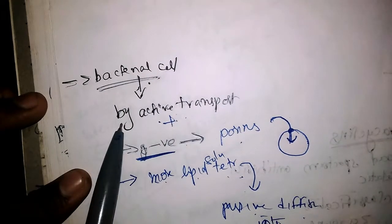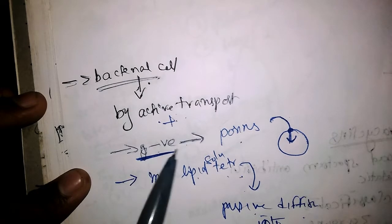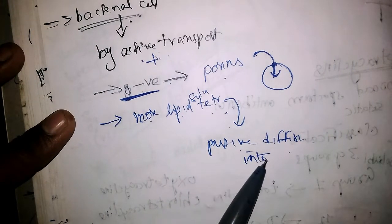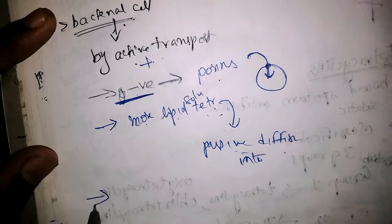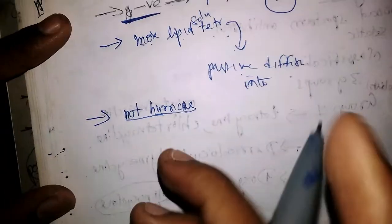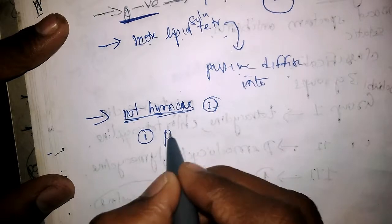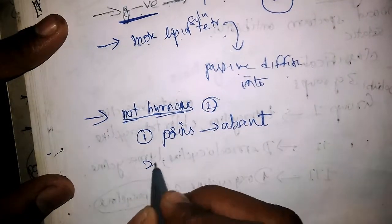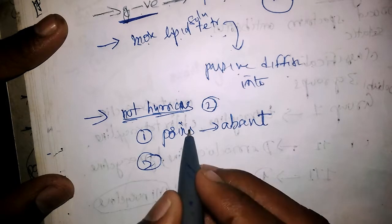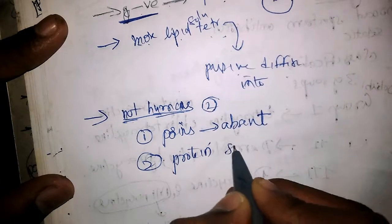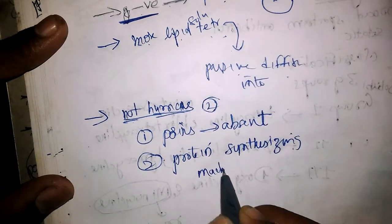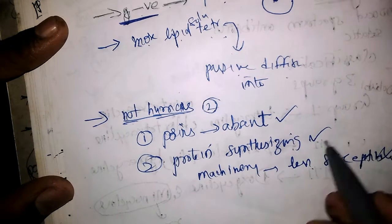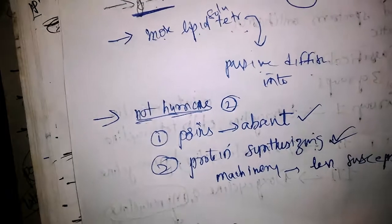There are two reasons why tetracyclines do not affect humans. First, the porins responsible for transporting tetracyclines into cells are absent in humans. Second, the protein-synthesizing machinery in humans is less susceptible to tetracyclines. These are the two reasons why tetracyclines are not harmful to humans.